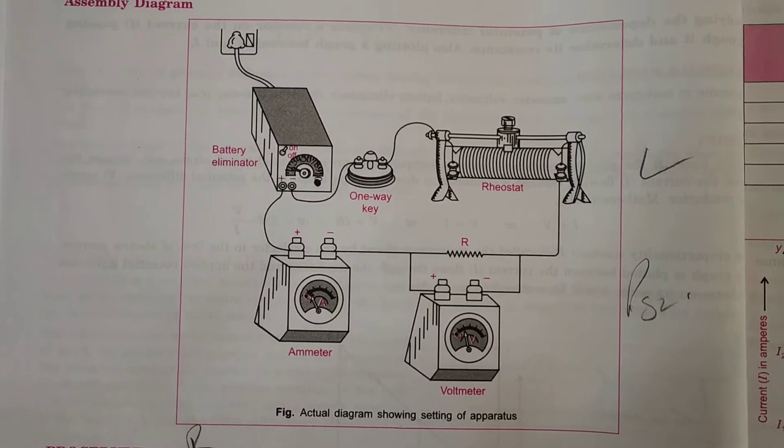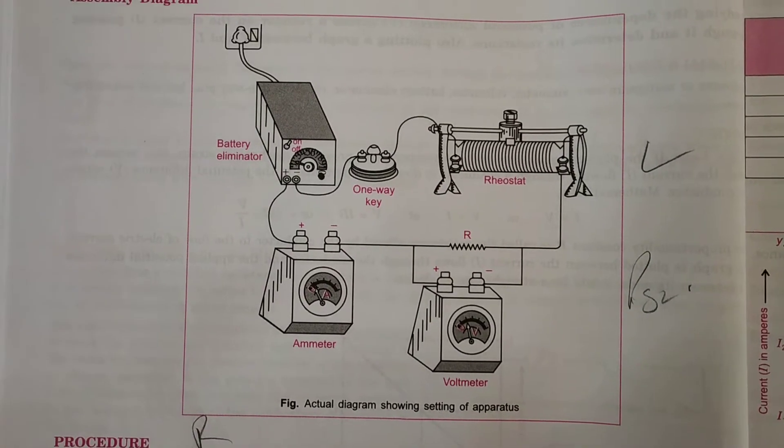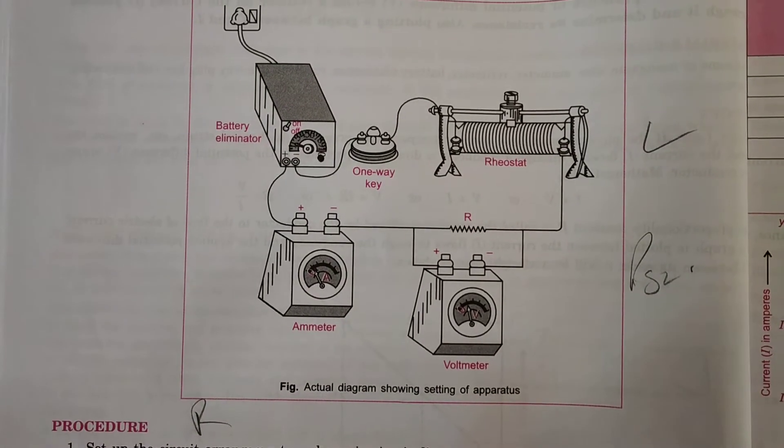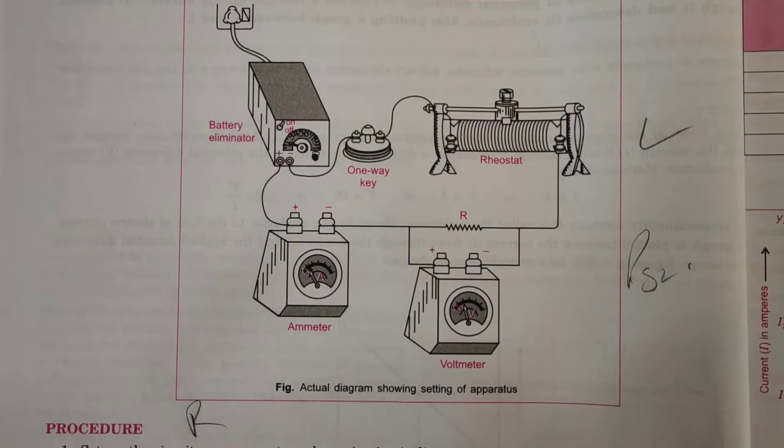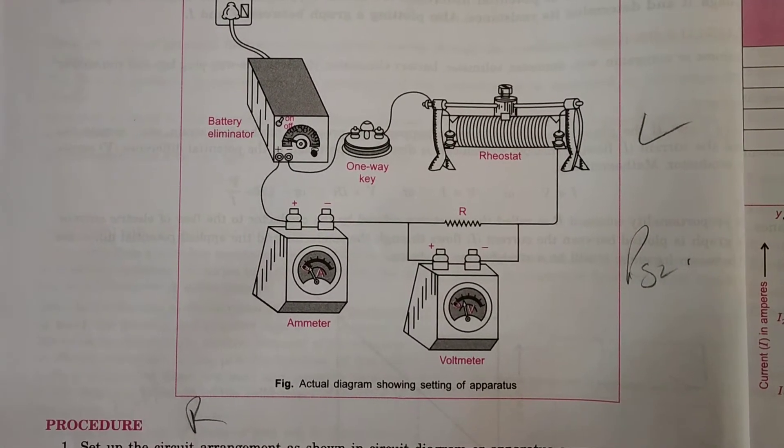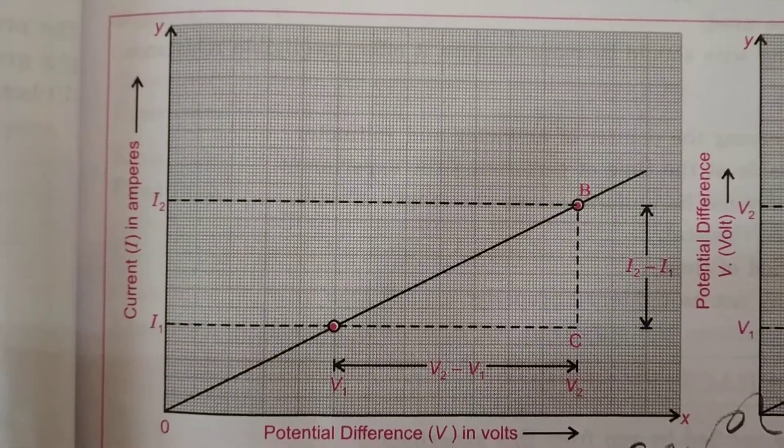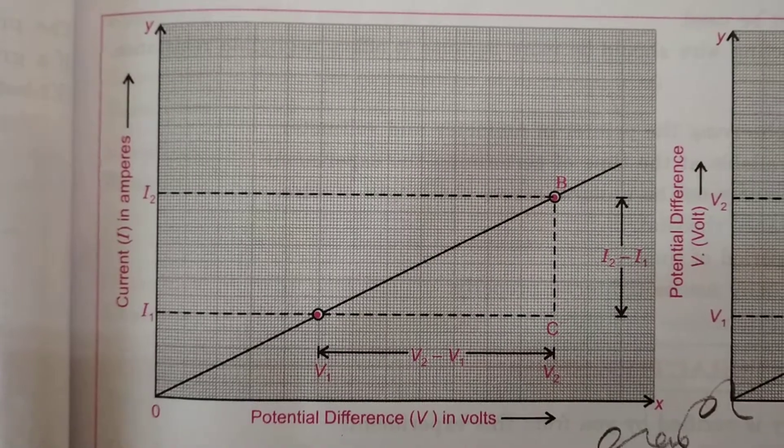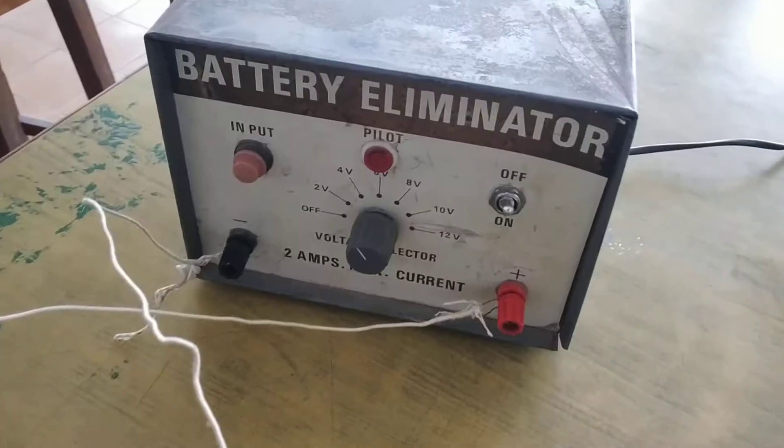Ohm's law states that current through a metallic conductor is directly proportional to the potential difference applied across the ends of the conductor, provided the temperature remains constant. This means potential difference is directly proportional to current. If we plot the graph between current and voltage, we get a straight line.